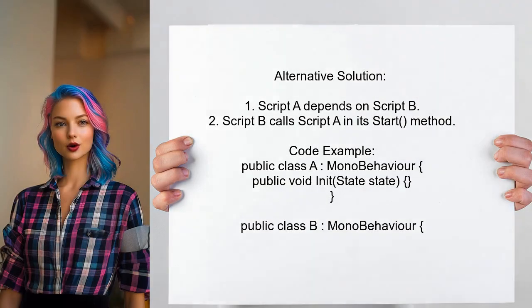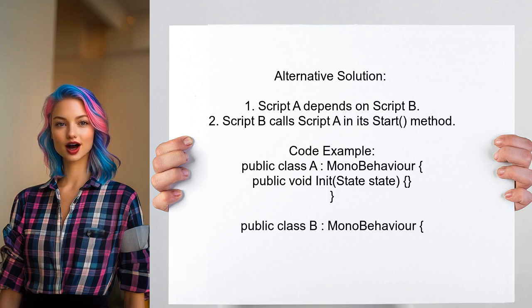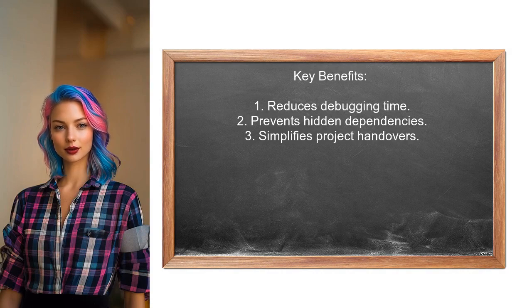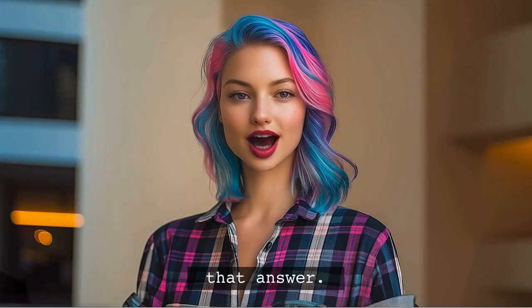An alternative approach suggests that if Script A needs to run after Script B, you should have Script B call Script A directly. This way, Script A can receive any necessary data from Script B. This method can help avoid long debugging sessions, especially in larger projects where script execution order can lead to hidden dependencies and bugs.